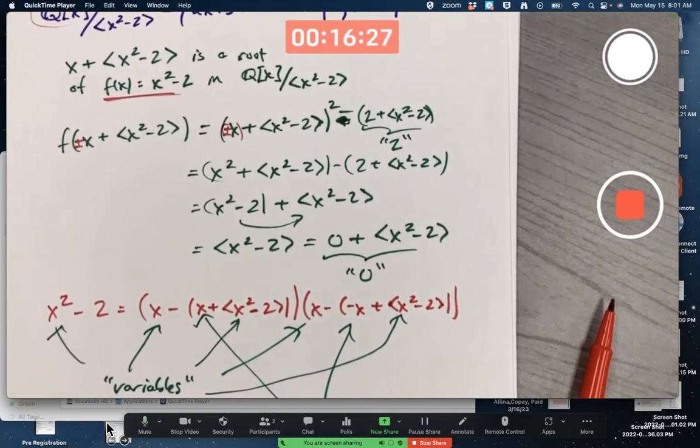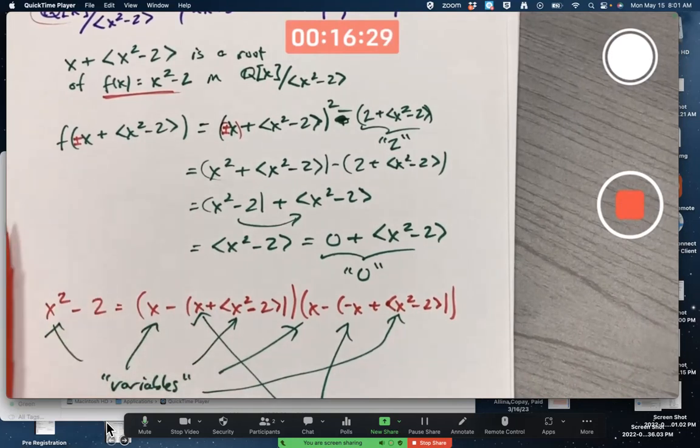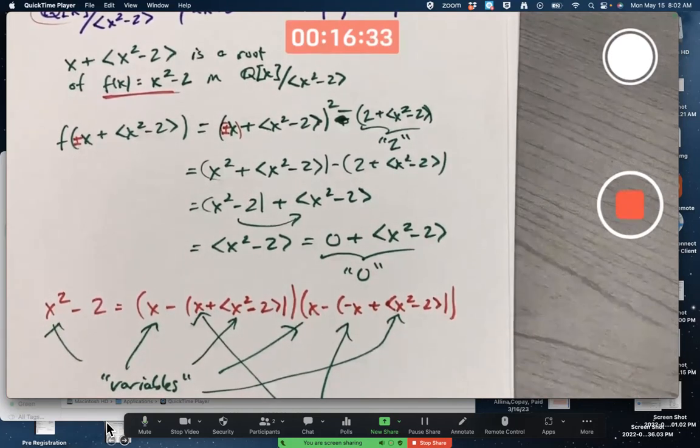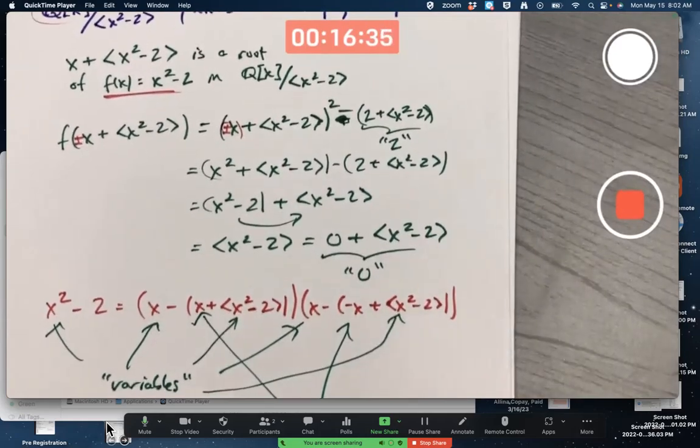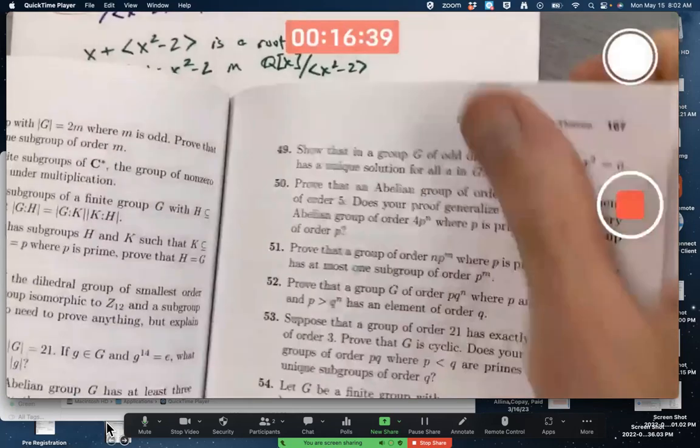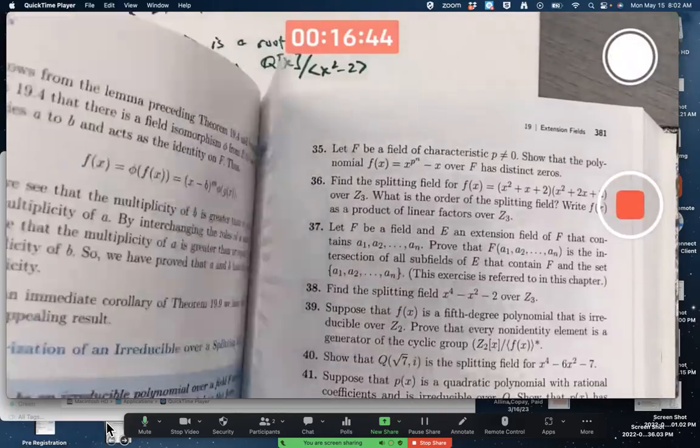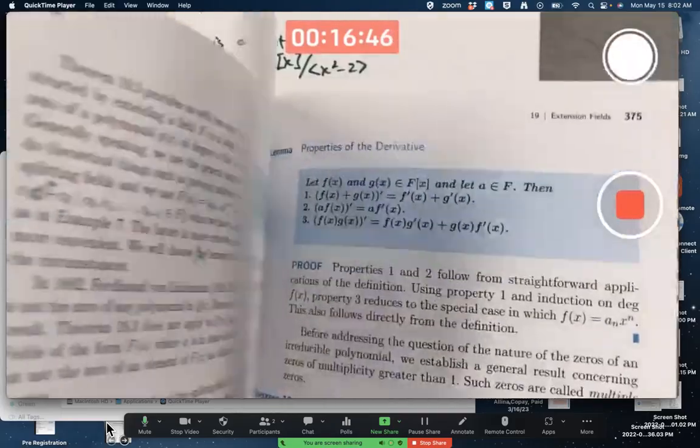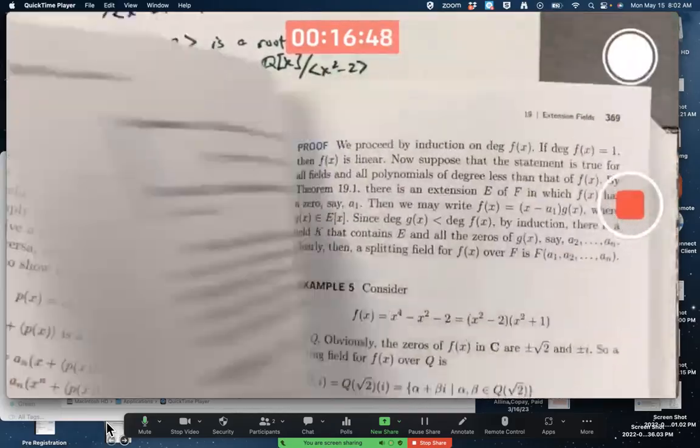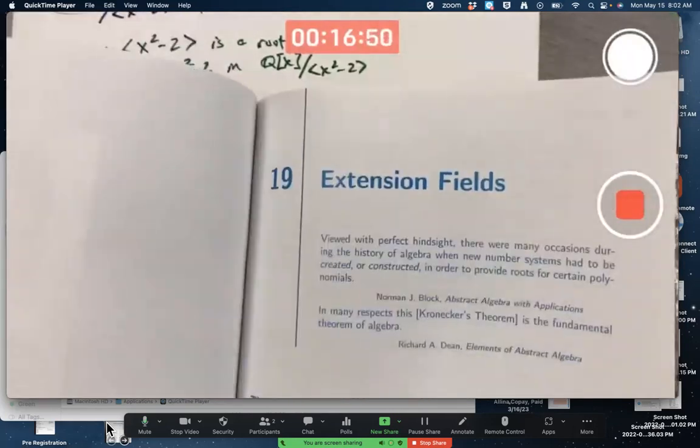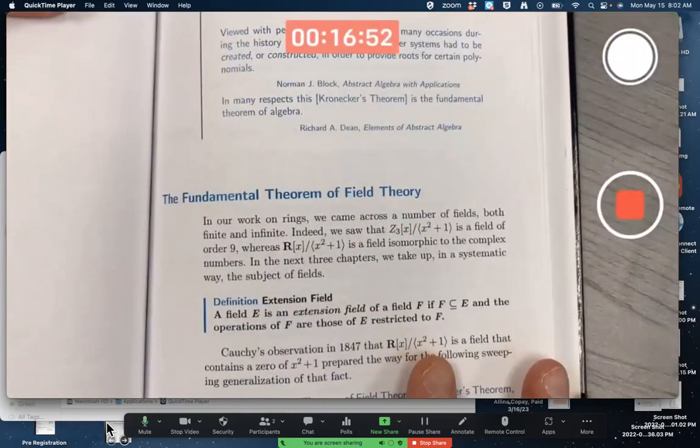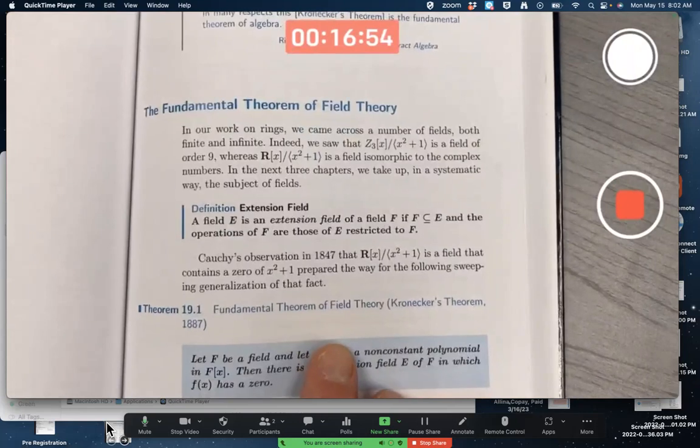Before we look there, we should mention that this is just a special example of the proof of Kronecker's theorem, which is that fundamental theorem of field theory. We haven't really spent much time with it, but chapter 19, the extension field chapter at the beginning. Fundamental theorem of field theory, Kronecker's theorem.